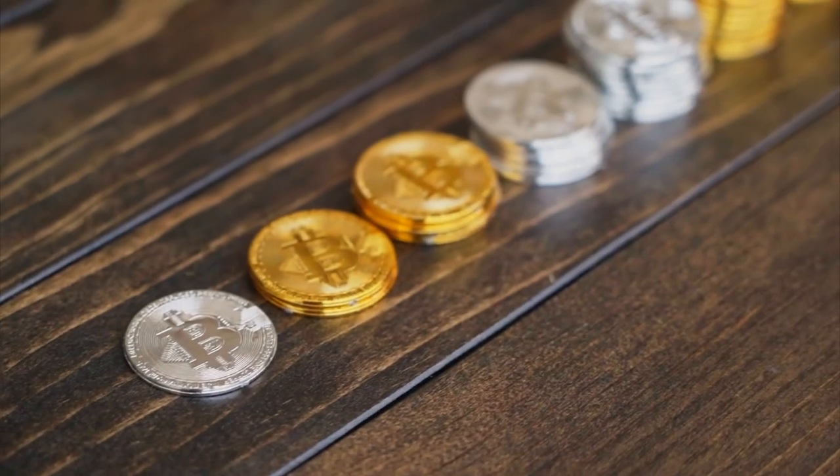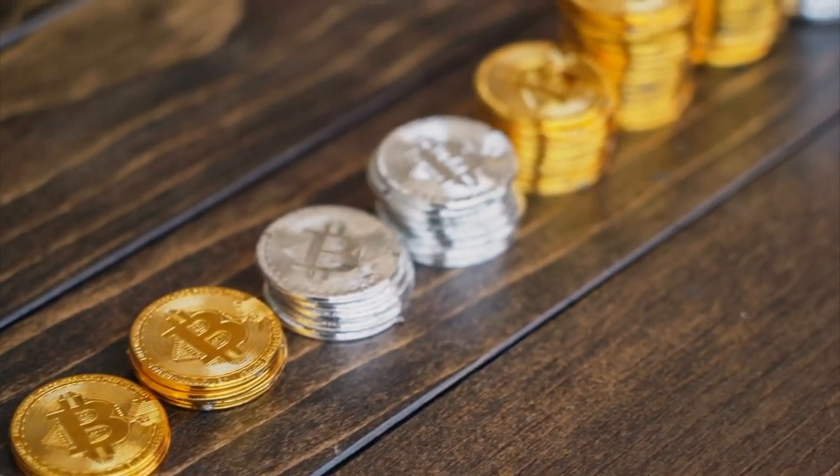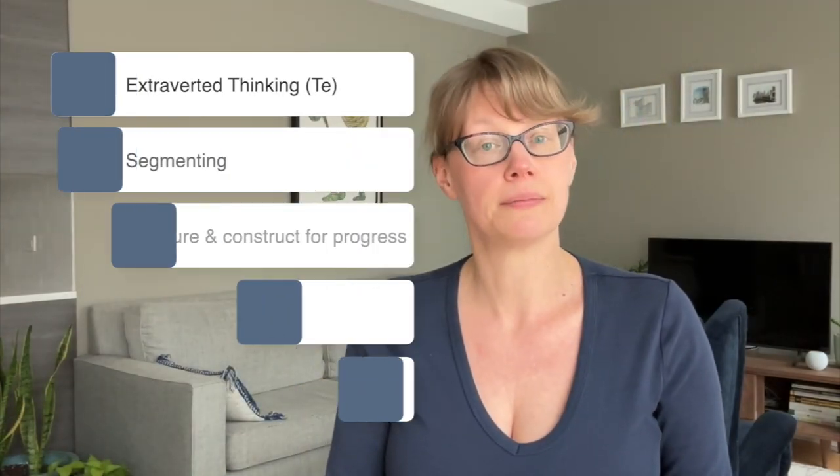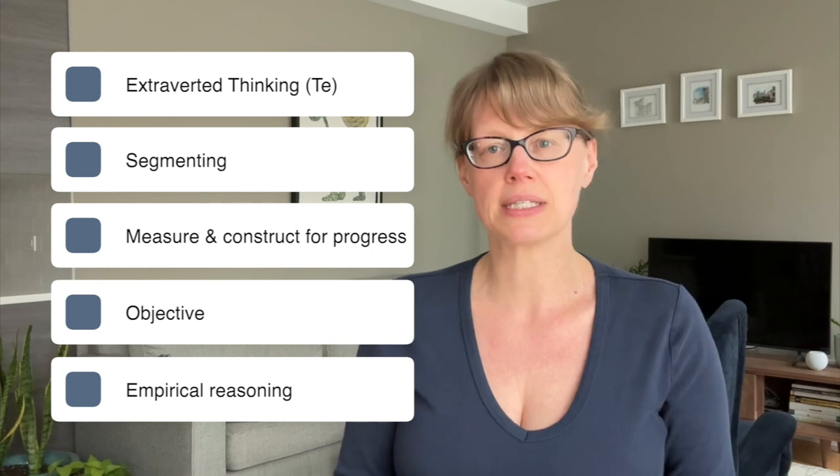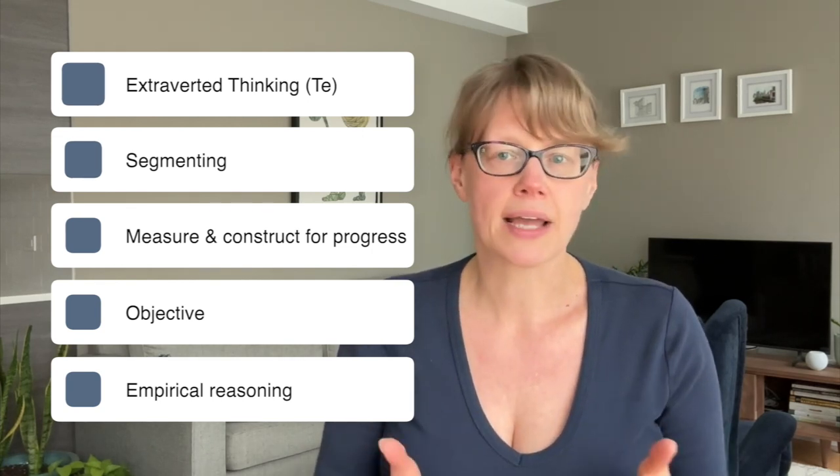Those were the four perceiving processes. Next up: the four judging functions. Put a logical order on your coins — you can stack them by size, by value, by color, or flip them heads or tails. This process is extroverted thinking, also known as segmenting or measuring and constructing for progress. We get a lot of training in this in school — it's doing something objective according to criteria you can see, here and now. More sophisticated uses include productivity hacking or setting up databases. Extroverted thinking uses empirical reasoning to make decisions.